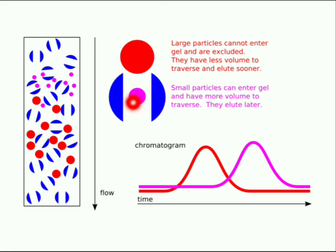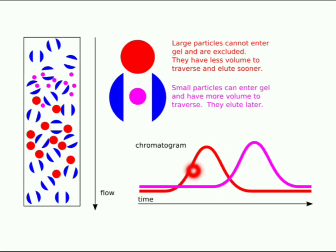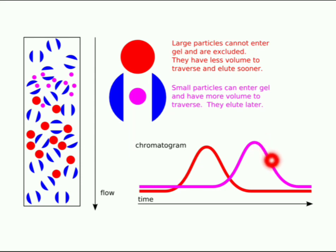Small particles can enter the gel and have more volume to traverse, which is why they elute later. So in the chromatogram obtained, larger molecules will have a shorter elution time while smaller molecules will have a longer elution time.